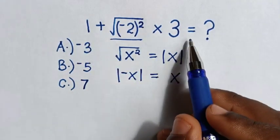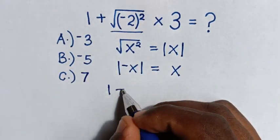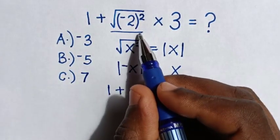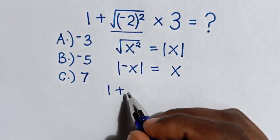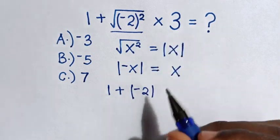Then, back into our problem, it will be 1, then plus, in here, it will be negative 2 absolute, which is in this form, then times 3.